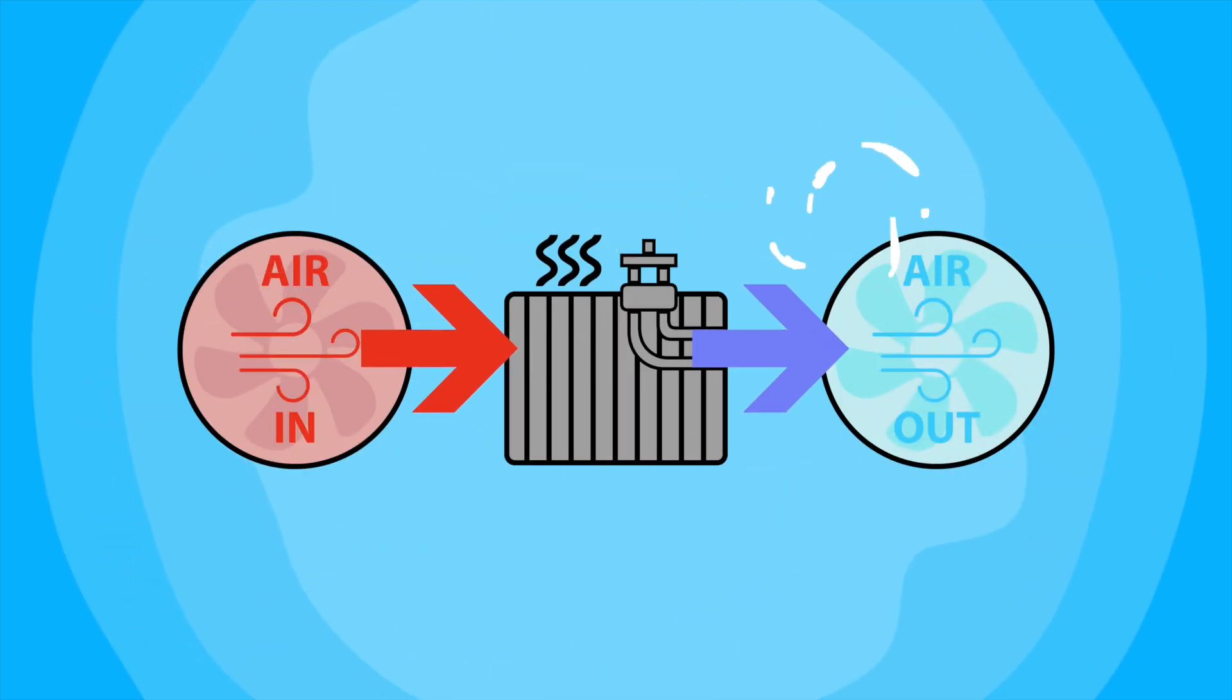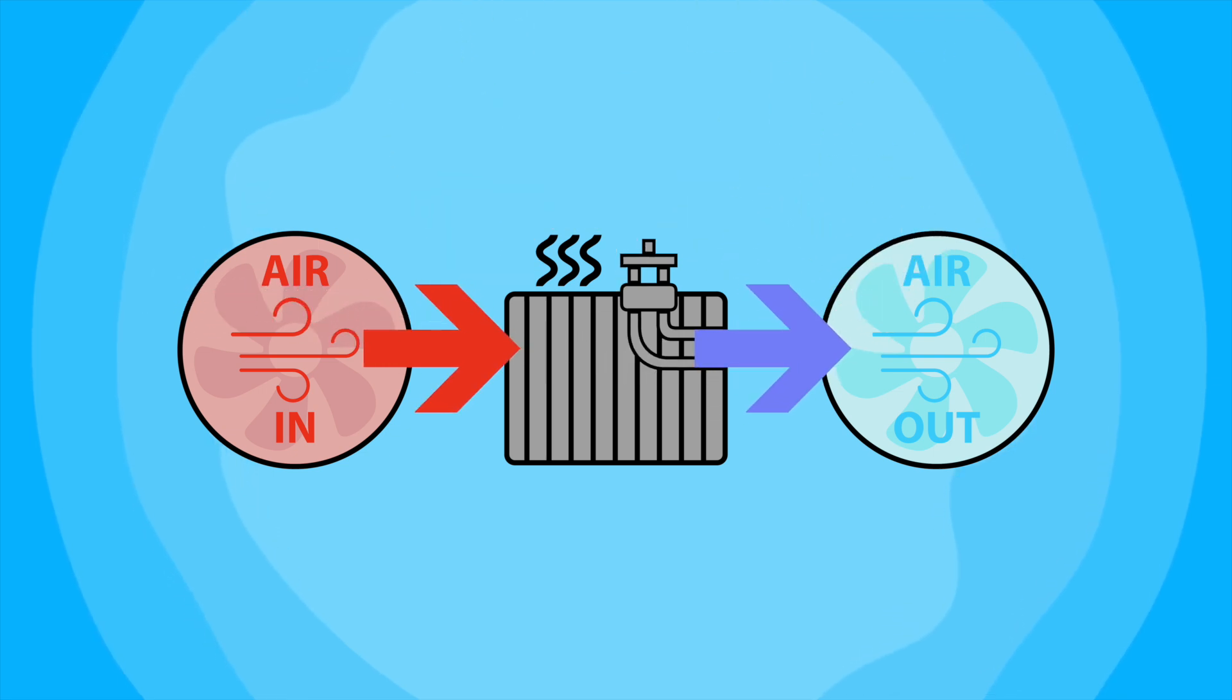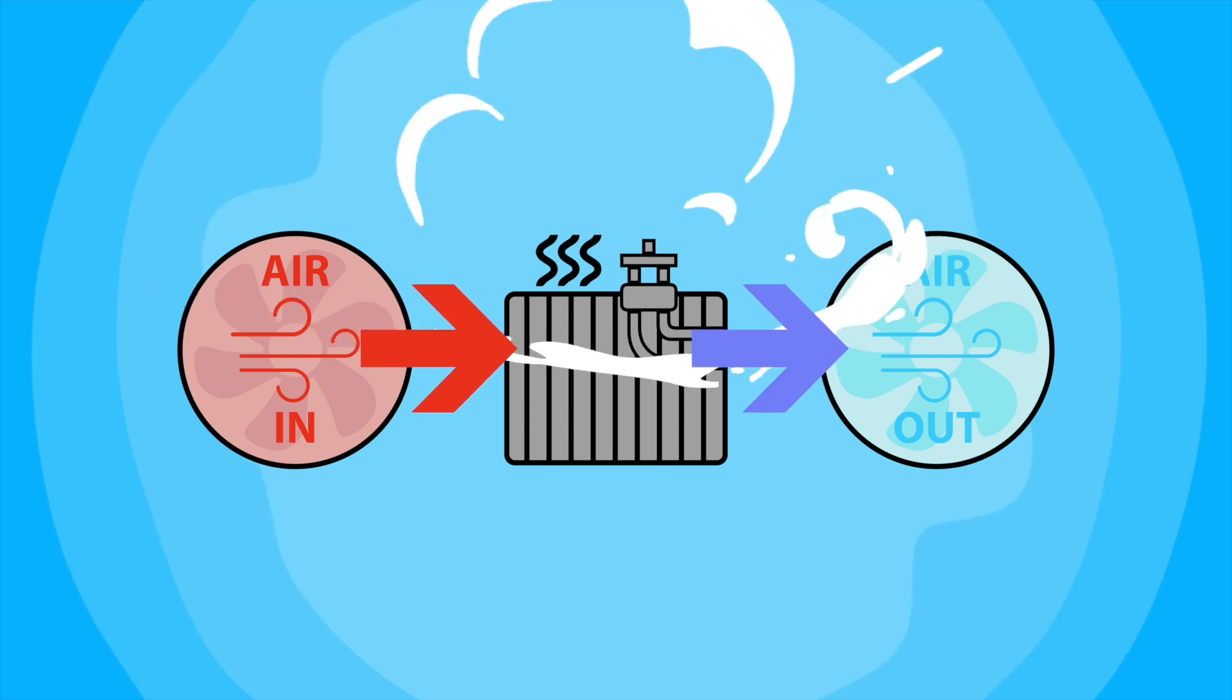The heat pump then passes this air over an evaporator coil containing a refrigerant, such as liquid freon. As the warm air passes over the coil, the refrigerant absorbs the heat, causing it to evaporate and turn into a gas.